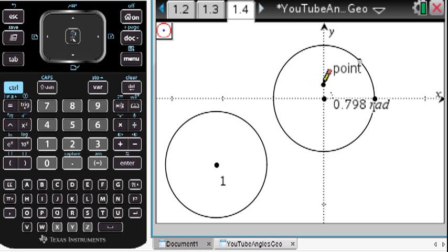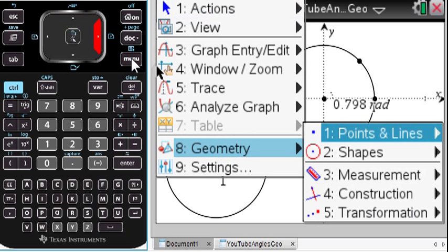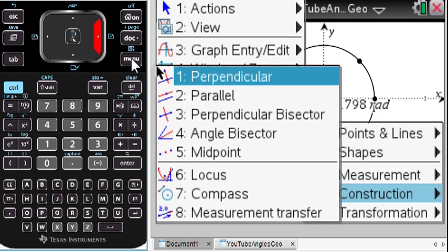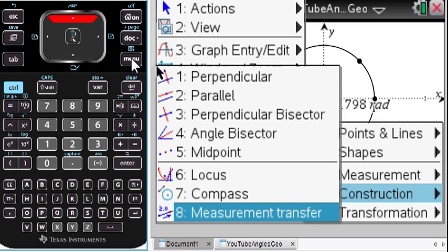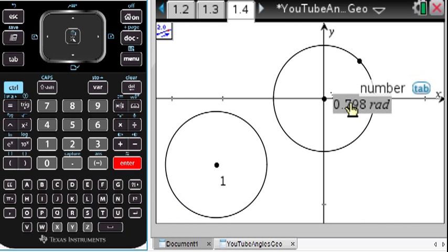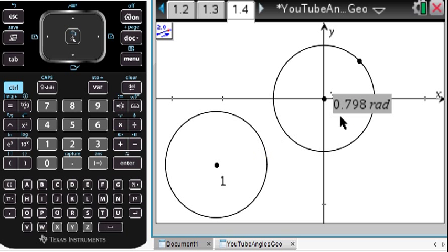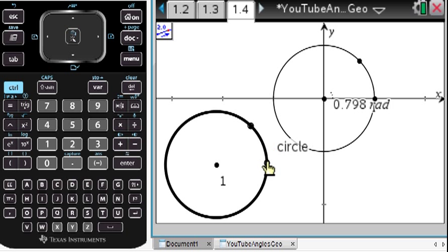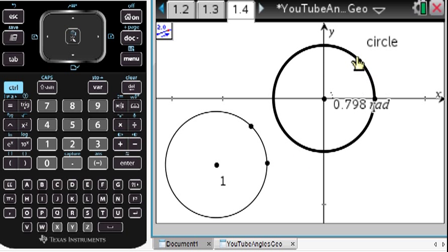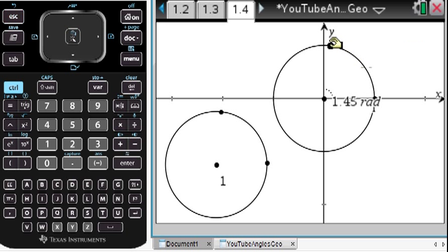I'm going to do menu, geometry, construct, measurement transfer, last choice. Let's transfer this measurement here to this circle right here, and there you can see we have transferred this angle measurement. This can be oriented in other ways and from that you can then make other shapes.